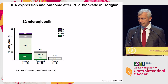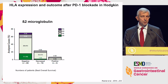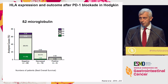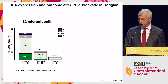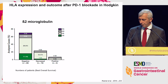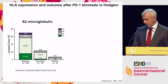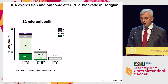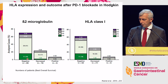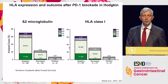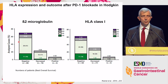Clinically, you probably know that Hodgkin is one of the tumors that responds best — with the higher frequency of responses — to PD-1 blockade. You clearly have complete responses in patients with a tumor that is completely negative for beta-2. Same for class I. So apparently, tumors in which the malignant cells are completely class I negative do respond.